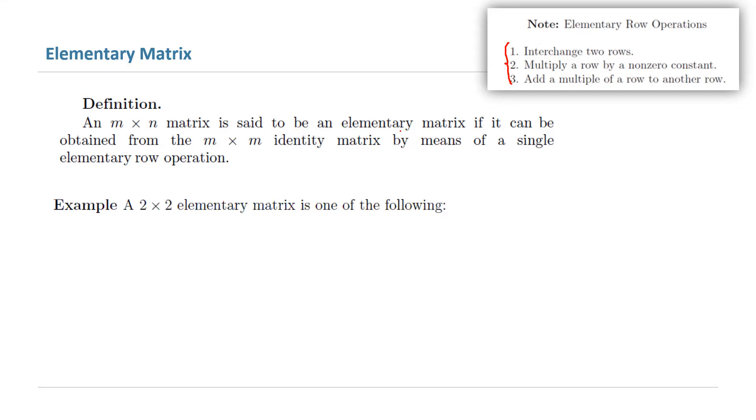A two by two elementary matrix can be of one of the following forms. Take a non-zero constant and start by writing your two by two identity matrix.